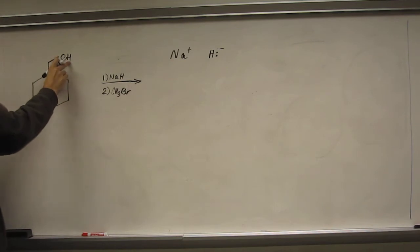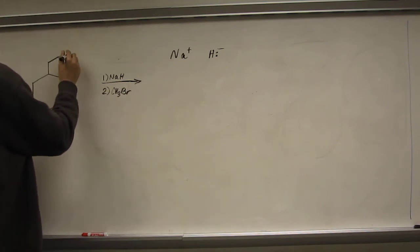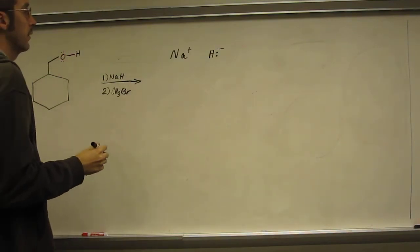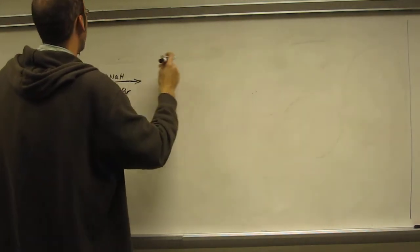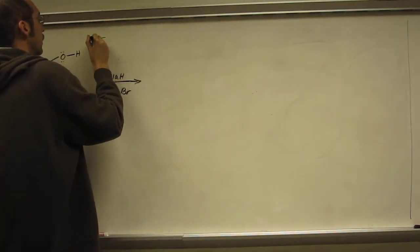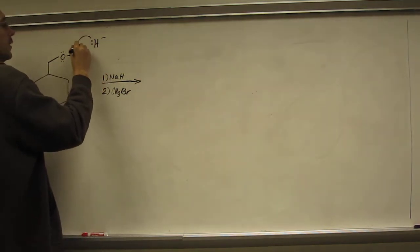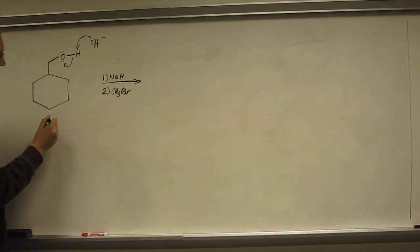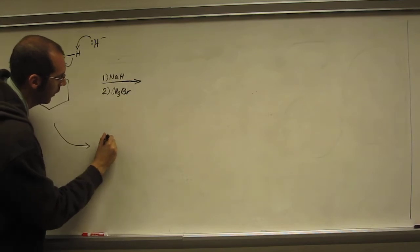Whenever it sees any sort of acidic hydrogen, even slightly acidic like the one on the alcohol, it'll go after it. Let's erase this and draw it back over here. What it'll do is it'll make hydrogen gas, and you'll actually see it bubble out of the reaction flask. Very fast reaction.